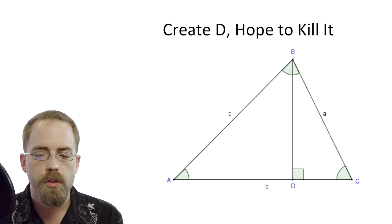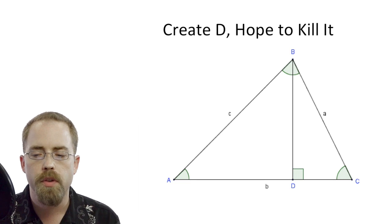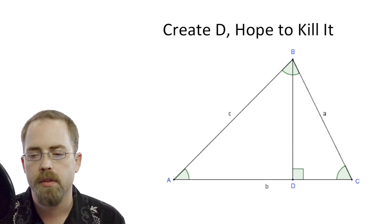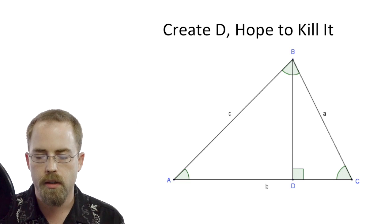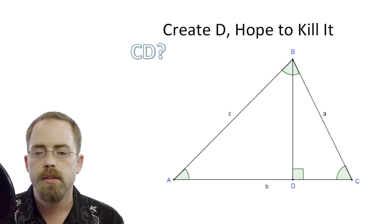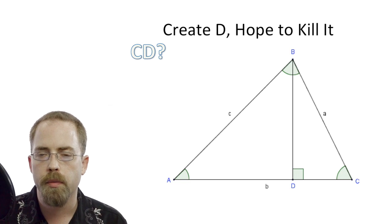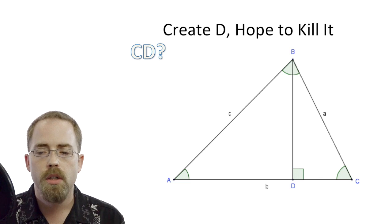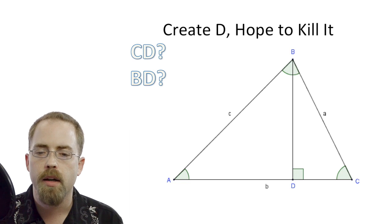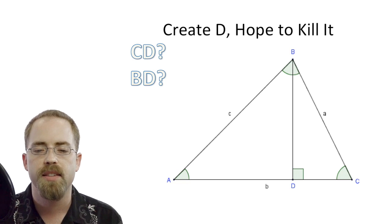So now, what is cos C in this case? Cos C is going to be adjacent, so that's CD over a. And what about sine C? Well, that's opposite over hypotenuse, so that's BD over a. So now we can start to say, what would CD alone be? CD alone would have to be, move that equation around, it would be a cos C. What would BD be equal to? Well, we just said that sine C is equal to BD over a, so BD equals a sine C.